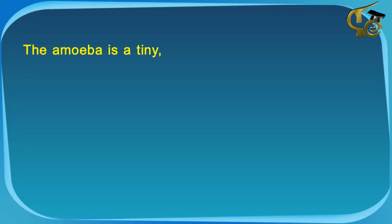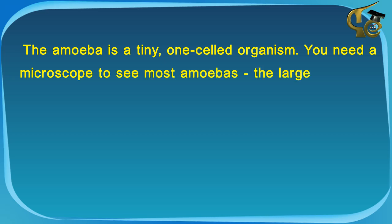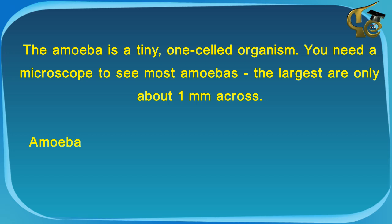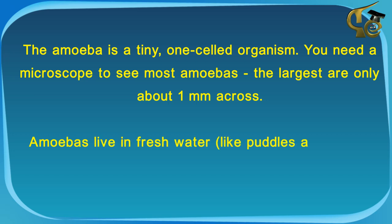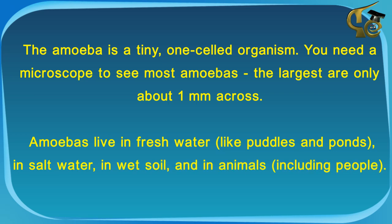The amoeba is a tiny, one-celled organism. You need a microscope to see most amoebas. The largest are only about 1 mm across. Amoebas live in fresh water, like puddles and ponds, in salt water, in wet soil and in animals, including people.